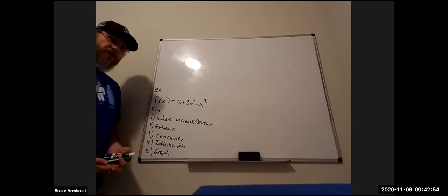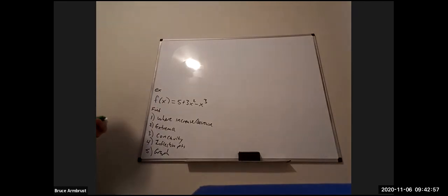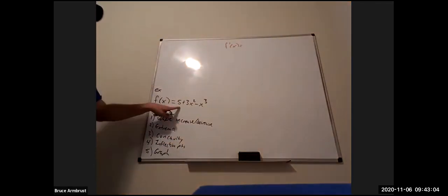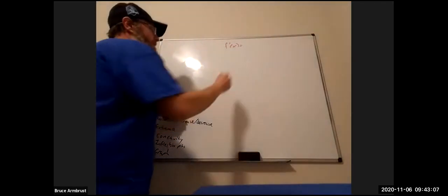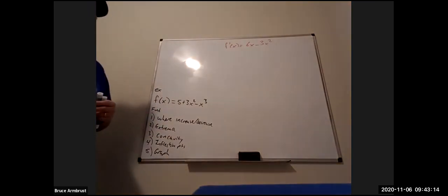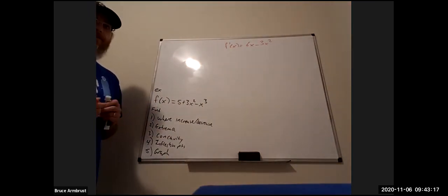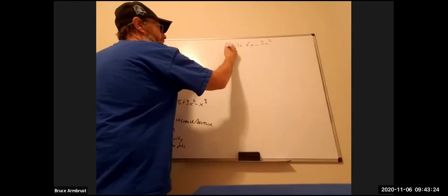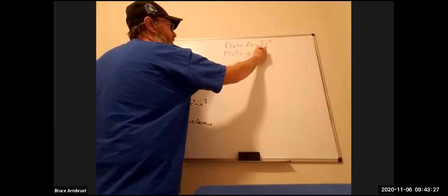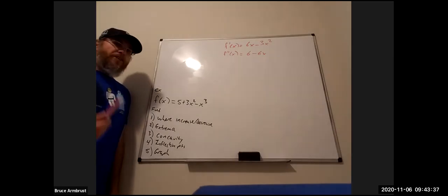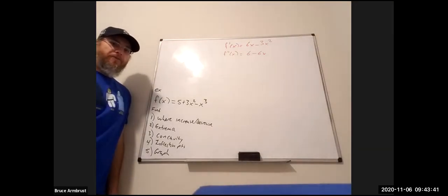Let's start with derivatives. The first derivative: the 5 (constant) goes away, leaving f′(x) = 6x − 3x². We also need the second derivative for concavity: f″(x) = 6 − 6x. We're actually done with the calculus — from here it's all just algebra and arithmetic.